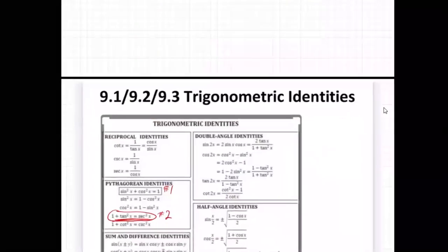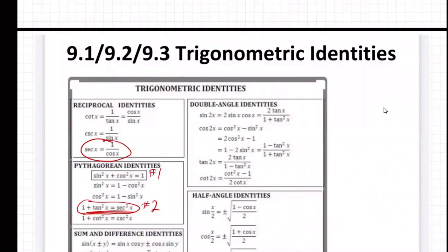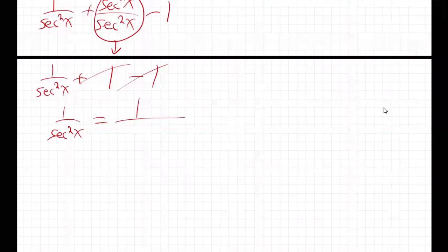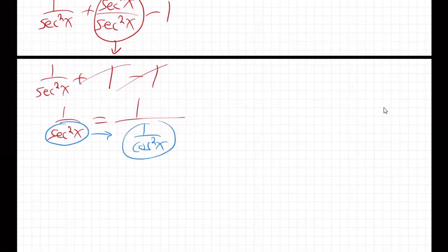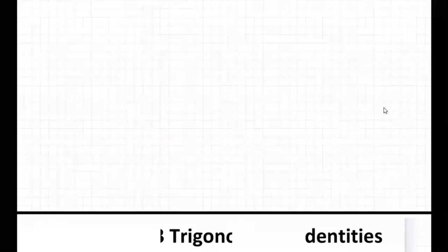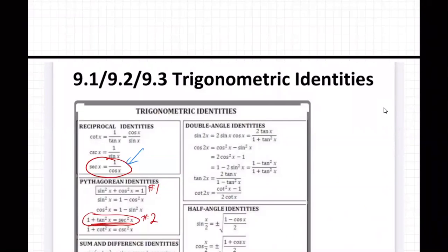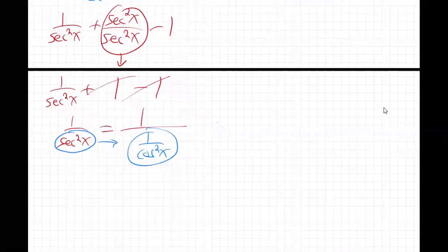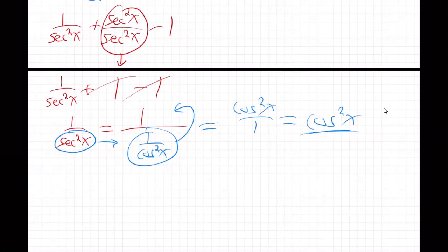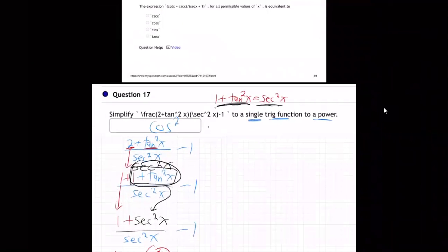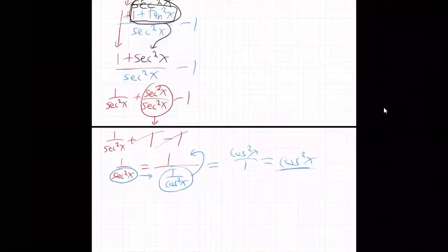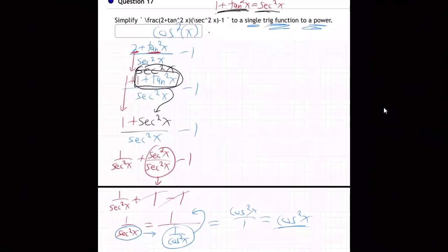Remember what secant is from the formula: secant is 1 over cosine, so sec²x is 1 over cos²x. So we have 1 over (1 over cos²x). With a fraction on the bottom of a fraction — as long as there's no adding or subtracting — just flip it up, so it becomes cos²x over 1 on top. That's just cos²x. Our answer is cosine squared of x — a trig function to a power. That involved some trickery!